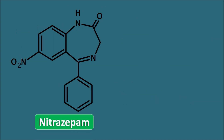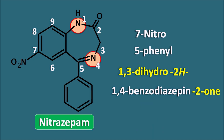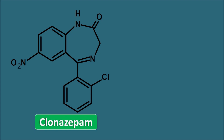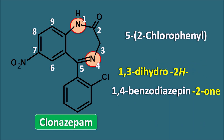Next is nitrazepam, which has a nitro group at position 7. Root name: 1,4-benzodiazepine-2-one, prefixed with 1,3-dihydro and 2H. Groups: 5-phenyl and 7-nitro. Then clonazepam — root name is the same. At position 5 it has a 2-chlorophenyl group and position 7 has a nitro group. Since 2-chlorophenyl starts with C, it comes alphabetically before nitro. The name of clonazepam is: 5-(2-chlorophenyl)-1,3-dihydro-7-nitro-2H-1,4-benzodiazepine-2-one.